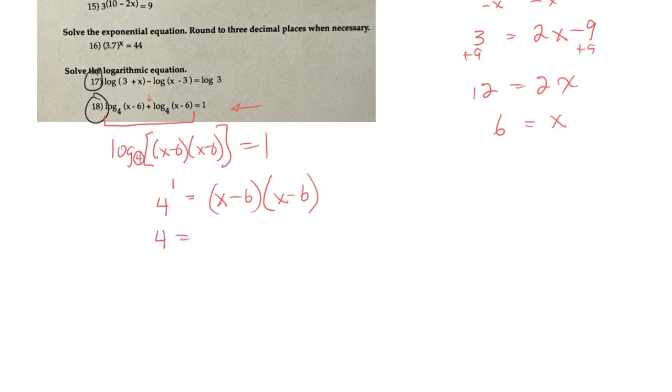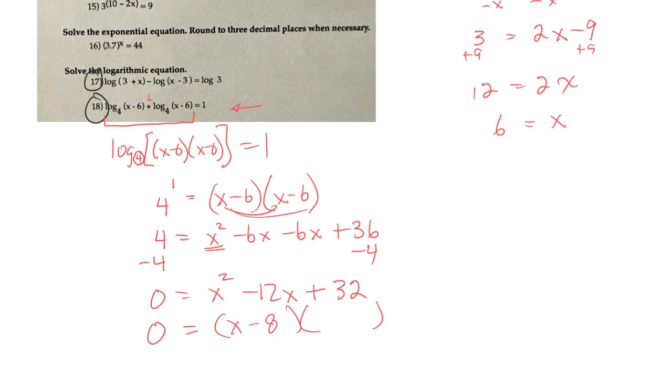Or 4 is equal to, if you foil this out, it'll be x squared minus 6x minus 6x plus 36. And then I see an x squared, so I'll make it equal to 0, subtracting 4 on each side. So x squared minus 12x plus 32 equals 0. And then I'll see if I can factor that. I think it comes out to x minus 8 and x minus 4.